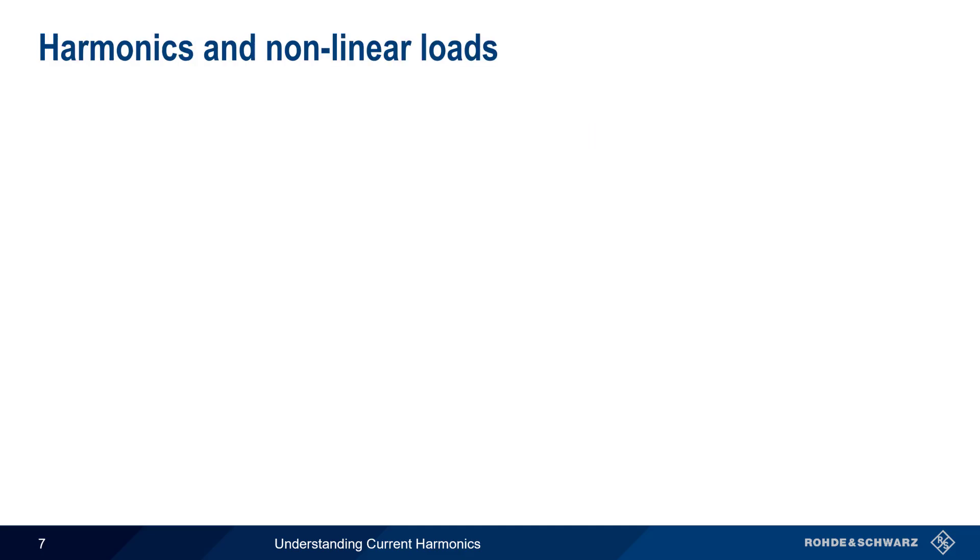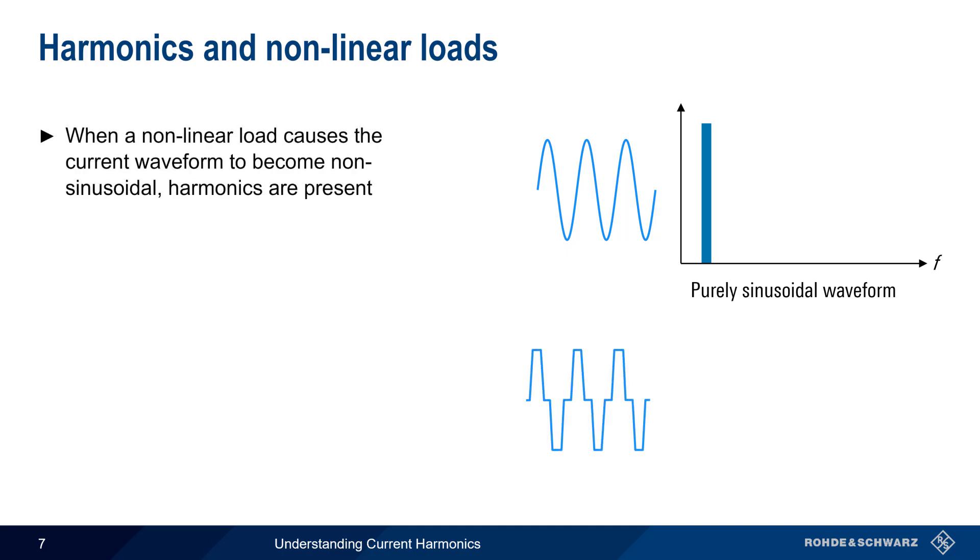In the case of a perfectly linear load, the current waveform will be perfectly sinusoidal, and there will be no harmonics. But a nonlinear load causes the current waveform to become non-sinusoidal, and this means that harmonics are present.